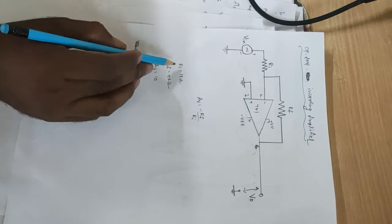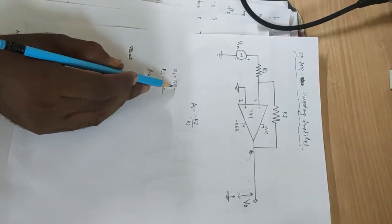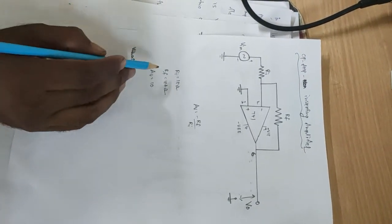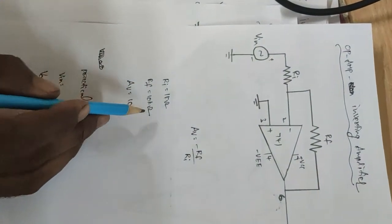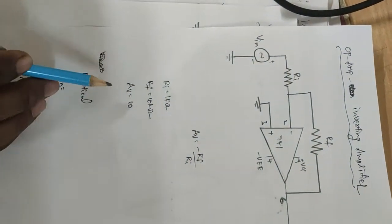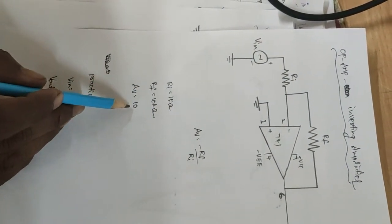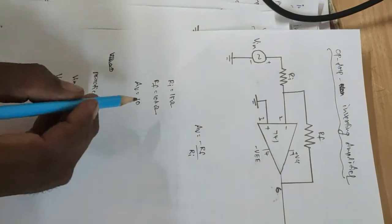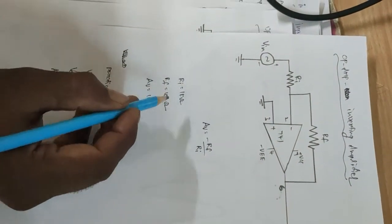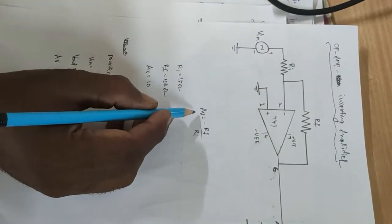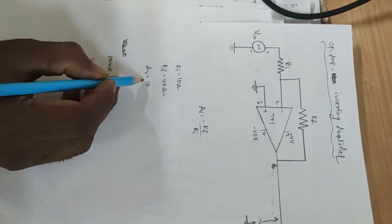The Input Resistance Ri is equal to 1 Kilo Ohm and Feedback Resistance Rf is 10 Kilo Ohm. The Gain Av is equal to 10, obtained by substituting Ri and Rf into the formula. The Voltage Gain equals 10.